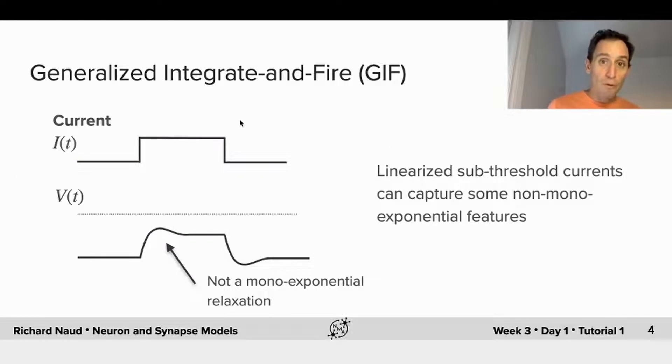One example of such effect can be seen here. When you give a step increase in current, instead of a mono-exponential relaxation to a stationary point, you have this overshoot that is followed by sometimes even an undershoot, and then reaches the stationary point. This non-mono-exponential relaxation is due to this sub-threshold current that is acting exactly in that period of time.